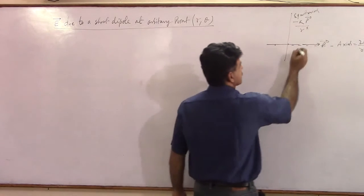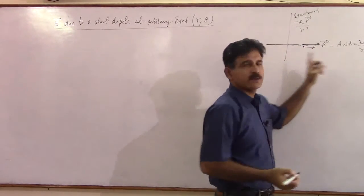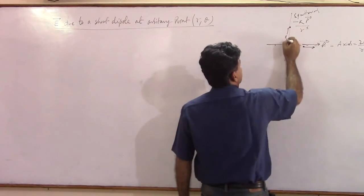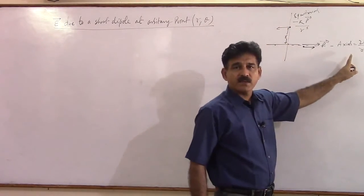So first this meaning is clear. If the point is here, then naturally the field will be in the direction of P. But if there is a point at a distance R, so this field will be in this direction because P is in this direction.